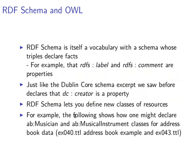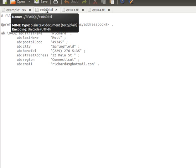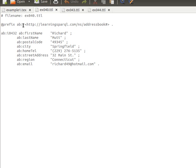The example is an address book with names and some other information. The author is going to show us how to create two classes for the address book: one class called 'musician' and one class called 'musical instrument.' Let's look at the code and try to explain it. The address book dataset looks like this.